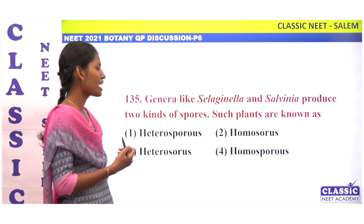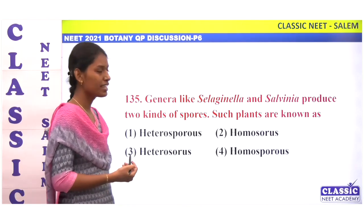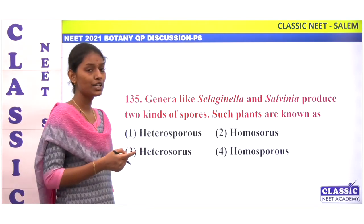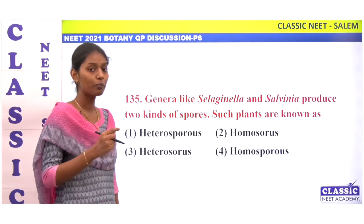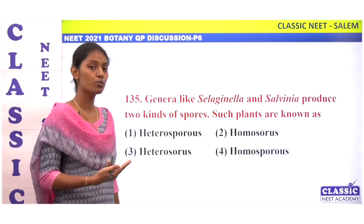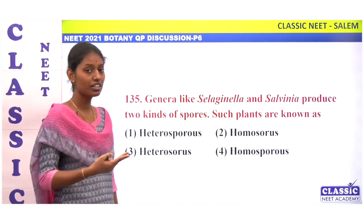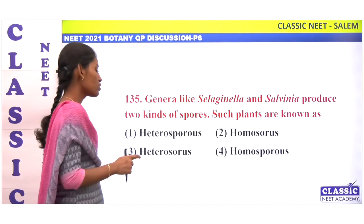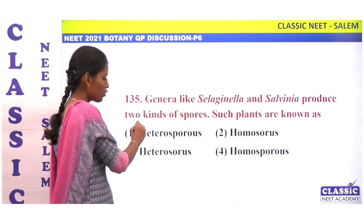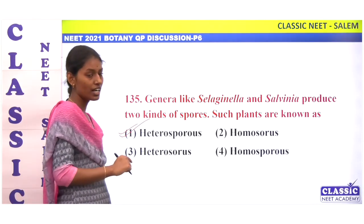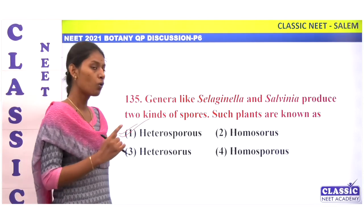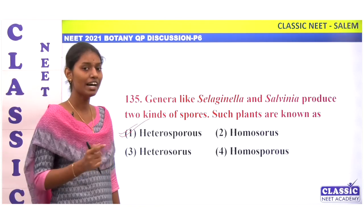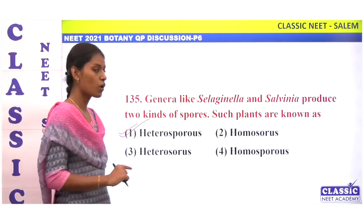Genera like Selaginella and Salvinia produce two different kinds of spores — macro and micro spores. When two different spores are produced, they are called heterospores, and such plants are called heterosporous. Option 1.